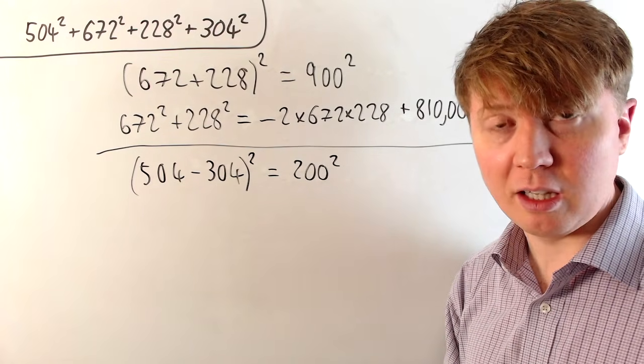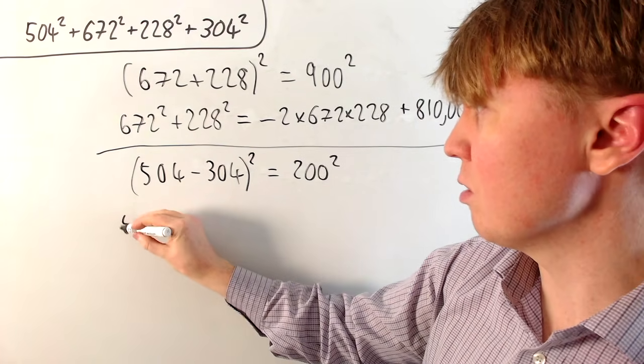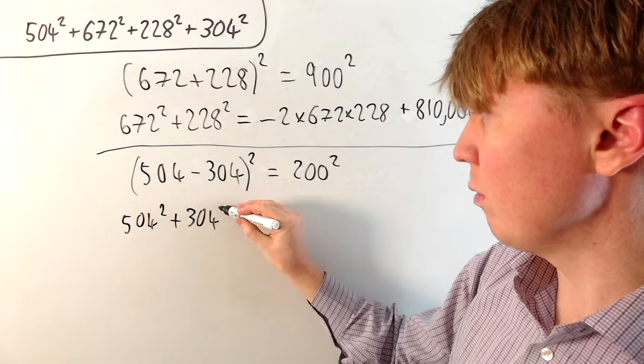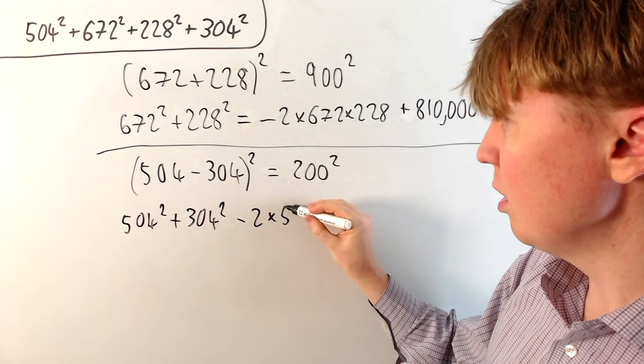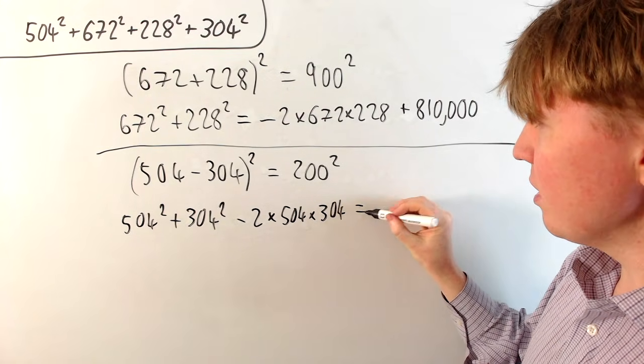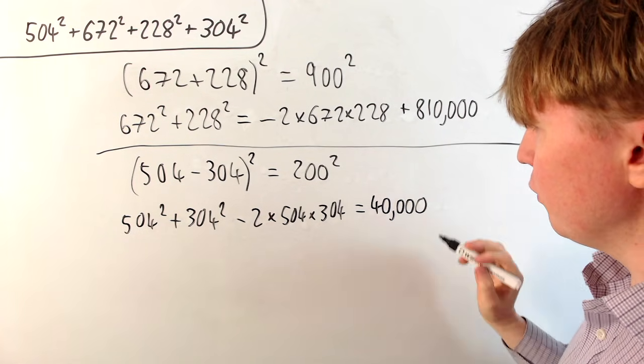Thinking of this algebraically rather than numerically, we can think of expanding the brackets here. So we're going to get 504 squared plus 304 squared. And now it's minus 2 times 504 times 304. And this is equal to 200 squared, which again, we can calculate that really easily. That's just 40,000.